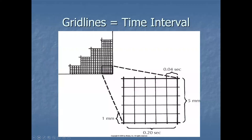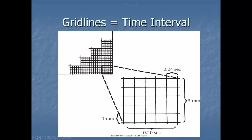On the ECG grid, the big boxes account for one-fifth of a second or 0.20 seconds. The little boxes are 0.04 seconds. No one's going to ask you on the ACCS exam to calculate heart rate just by counting little boxes. However, these boxes can come in handy for estimates. If the actual heart rate is not displaying — which it will in most cases — here are some tricks to closely estimate or calculate the heart rate.